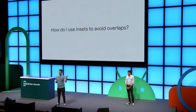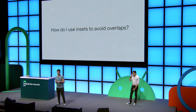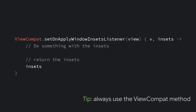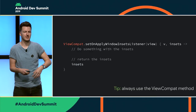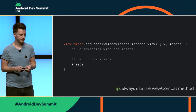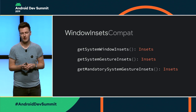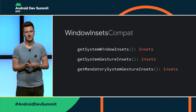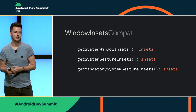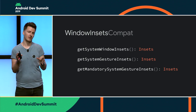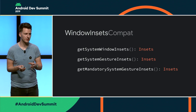Now let's talk about how you actually avoid overlaps. We're going to use the ViewCompat API, specifically the applyWindowInsets method. Window insets is an API that's been around for a while, and one tip is that you should always try to use the ViewCompat method. The API for window insets has changed over the years, but the API now matches what we have in Android 10, so you'll get the same API all the way back to API 14. It also has some bug fixes from the framework.